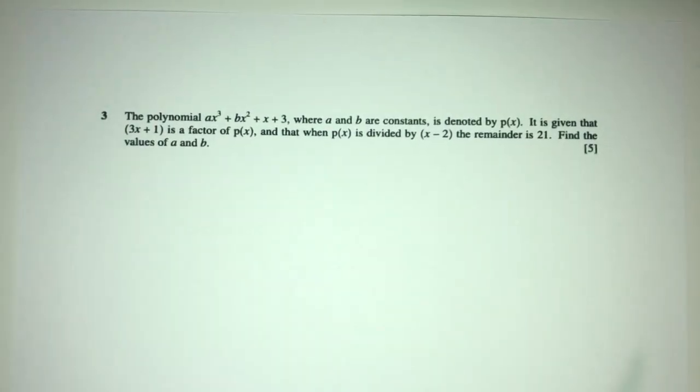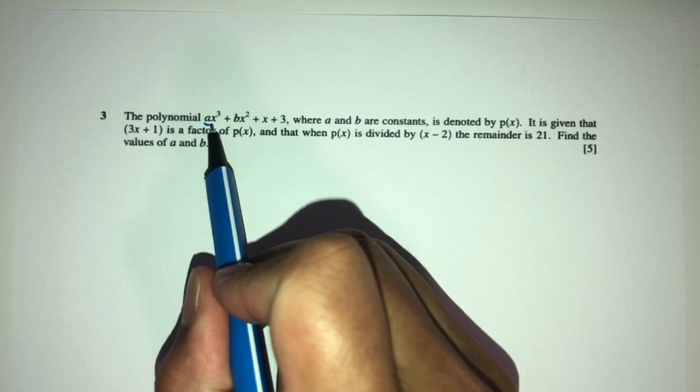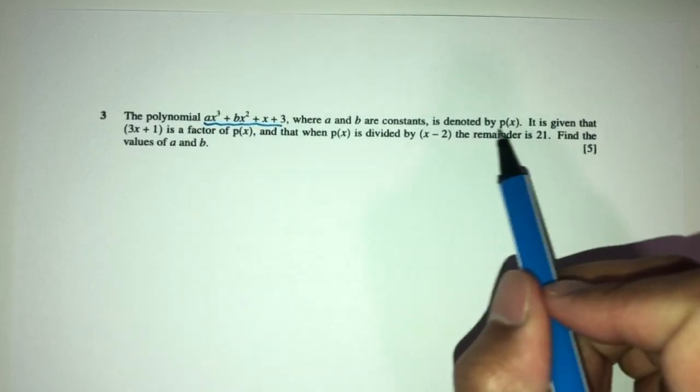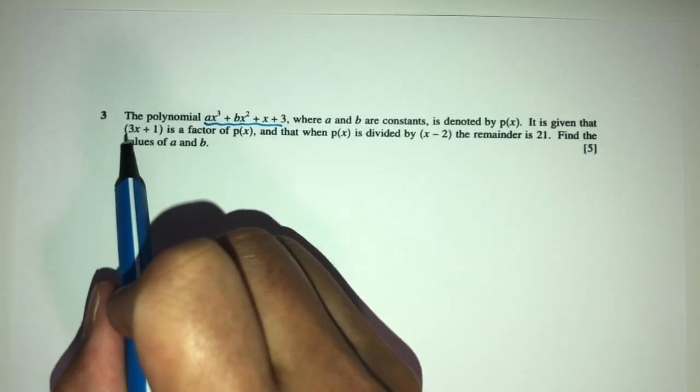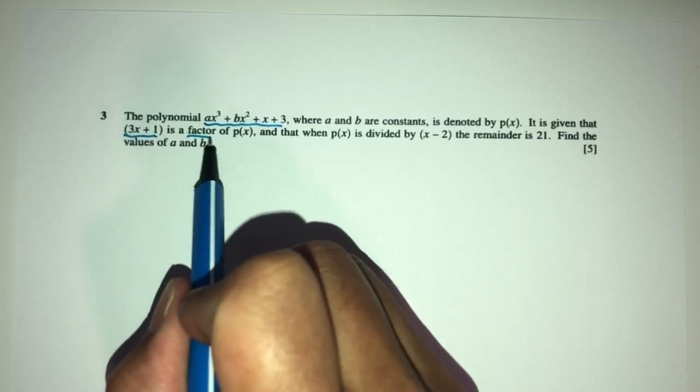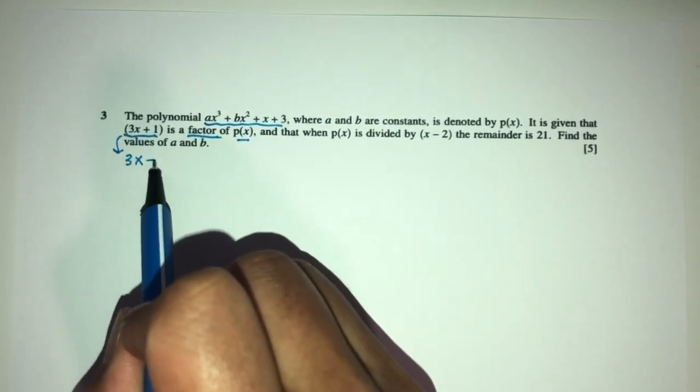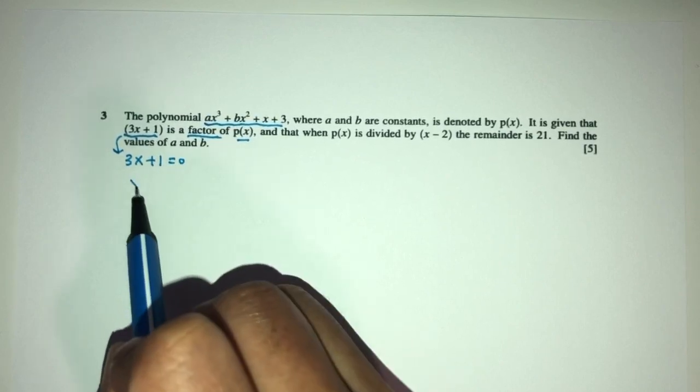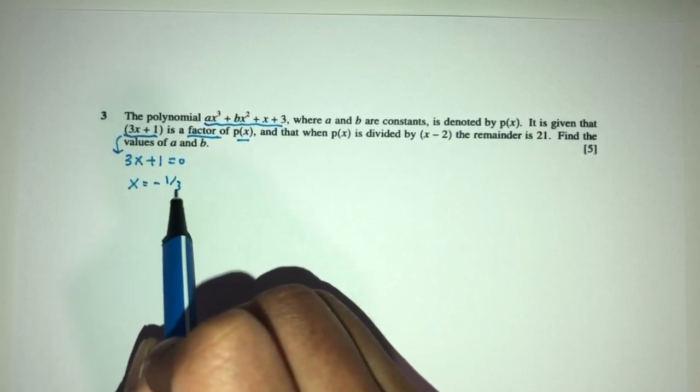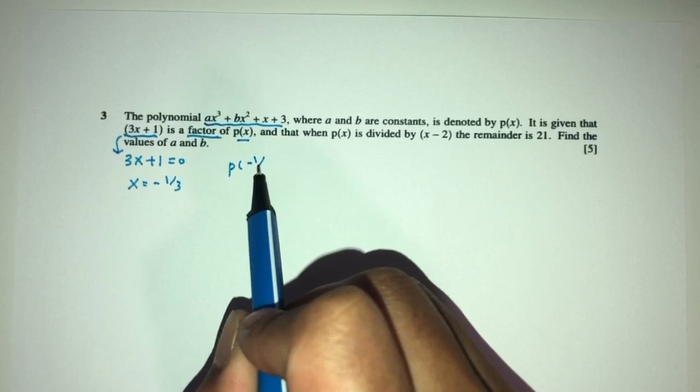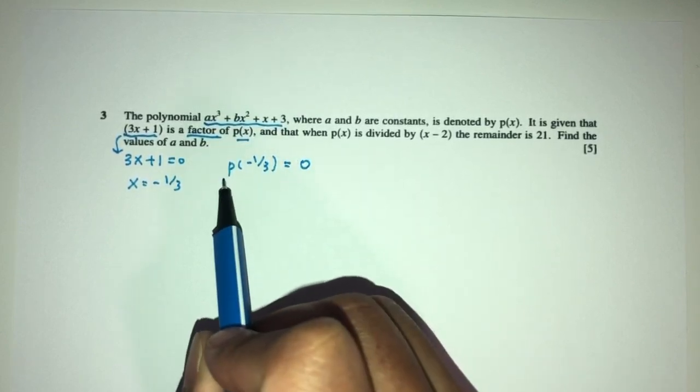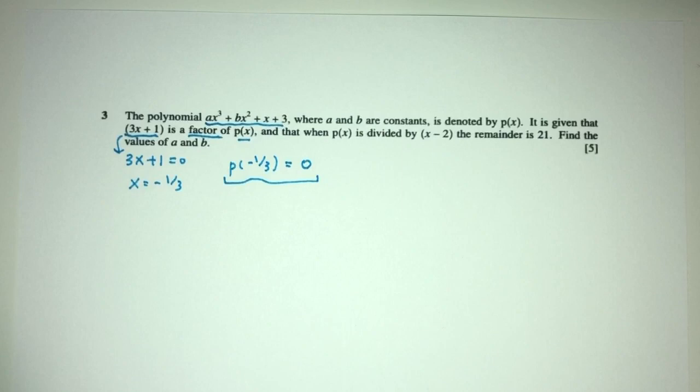Now let's move on to question number three. Here we have p(x) defined by this polynomial. It is given that 3x + 1 is a factor of p(x). So pretty easy. For what value of x? 3x + 1, equate that to 0. x will be -1/3. It means when p(x) took in the value of -1/3, there was no remainder. Using that information, let's form an equation.